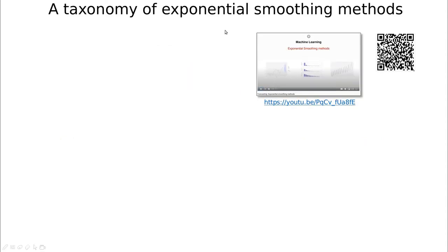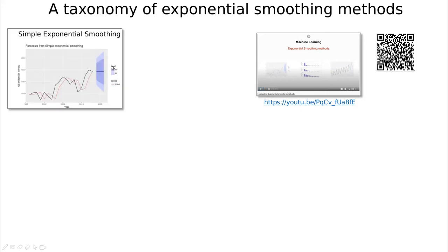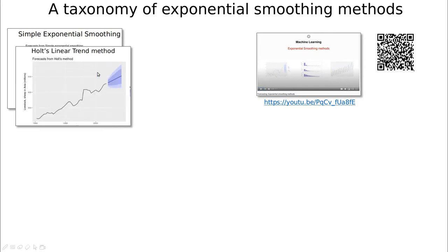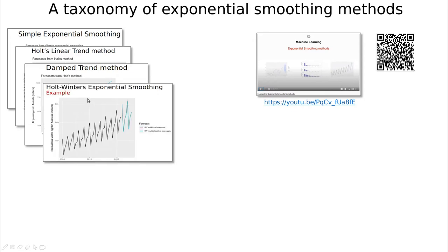If you go back to the video about smoothing methods, we started with something very simple. The idea was to create a new time series — the red one — which is a kind of weighted average of the last observation and something related to the whole past. In the very simple model, we could only do a prediction growing exponentially in the future, but the prediction was really poor. We improved this idea using the Holt method and the damped method.